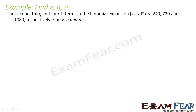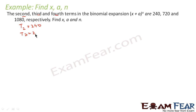Here is a problem where it says that the 2nd, 3rd and 4th terms of this binomial expression are 240, 720 and 1080 respectively. So we have to find the value of x, a and n. We are given t2 = 240, t3 = 720 and t4 = 1080.